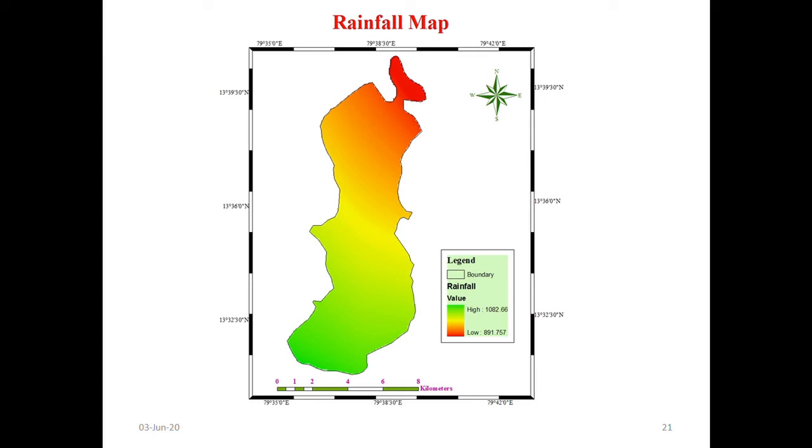Here rainfall is the major predominant factor which is delineated in ArcGIS software with Thiessen polygon method which shows 891 mm of rainfall with highest of 1082 mm of rainfall in the watershed.